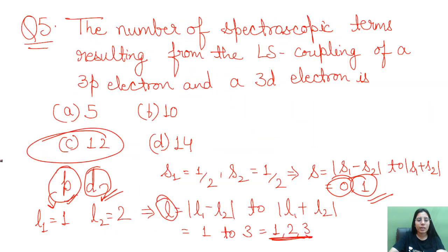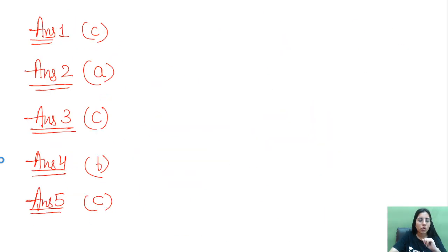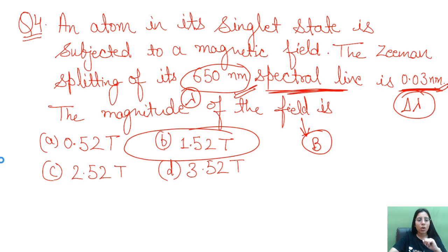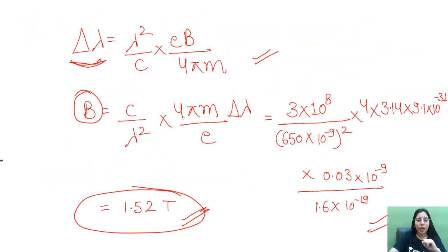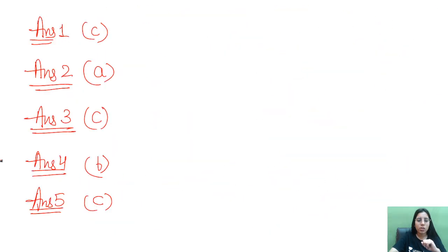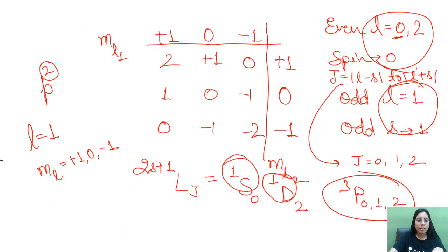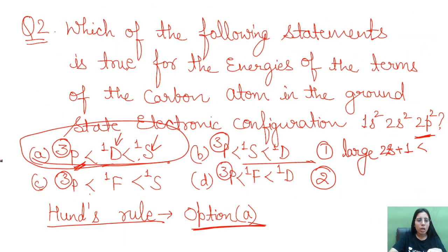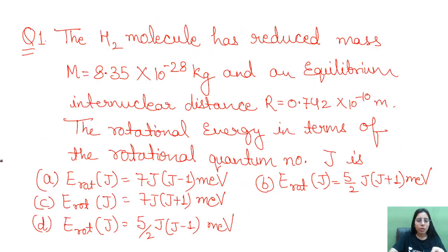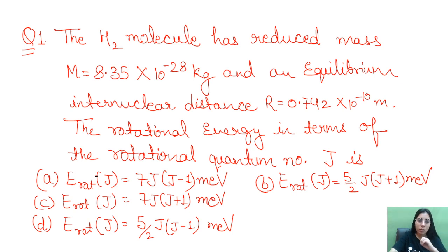To summarize the answers: Question 5 — Option C; Question 4 — Option B; Question 3 — Option C; Question 2 — Option A; Question 1 — Option C. These are very important concept-based questions, and I hope every point is clear to all of you.